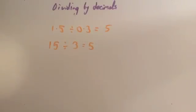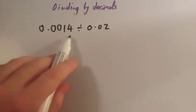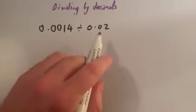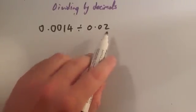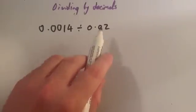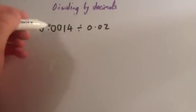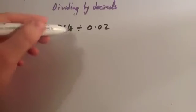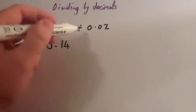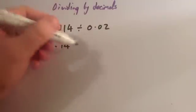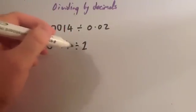Let's look at one final example. We're going to do 0.0014 divided by 0.02. This is the number you need to make a whole number, because it's easier to divide by whole numbers. To make 0.02 a whole number, you move the decimal place once, twice — so we're going to times them both by 100. If we times 0.0014 by 100, we move the decimal place twice and get 0.14. And if we times 0.02 by 100, we get 2. So we're going to do 0.14 divided by 2.